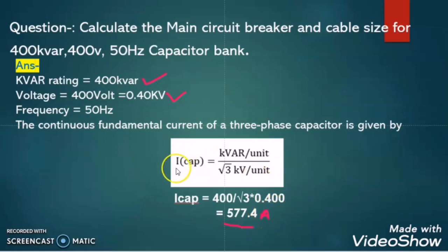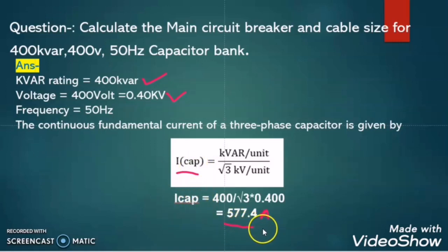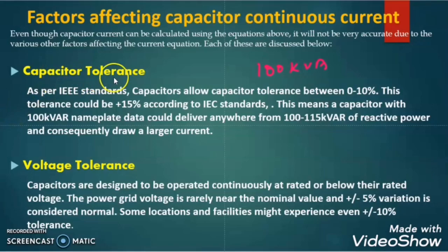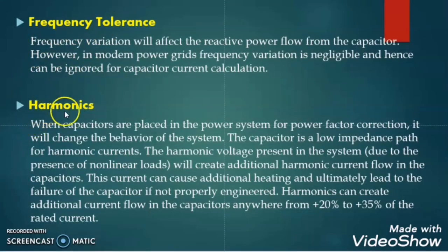So this is the current which will flow through the capacitor bank. But this capacitor current is not very accurate as it depends on many factors. These factors are capacitor tolerance, voltage tolerance, frequency tolerance, and harmonic tolerance.